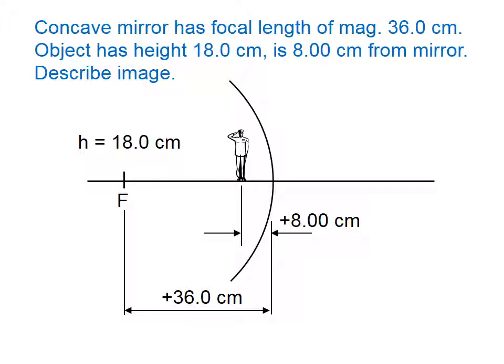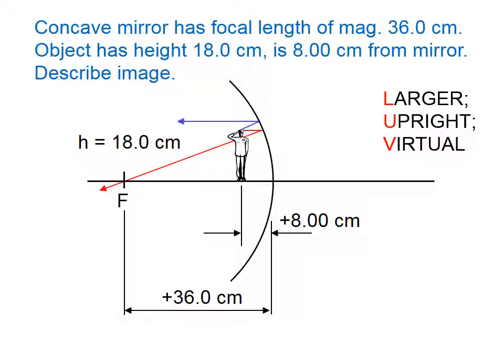Let's go ahead and draw out that previous problem. Here it is. We know that we should get a larger, upright, virtual image. If we go parallel to the principal axis and reflect through the focal point, then line up with the focal point, and when we hit the mirror, bounce back parallel. Those reflected rays do not intersect, so we need to project the reflected rays behind the mirror, and there's our image: larger, upright, virtual.